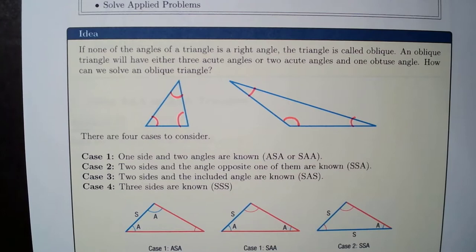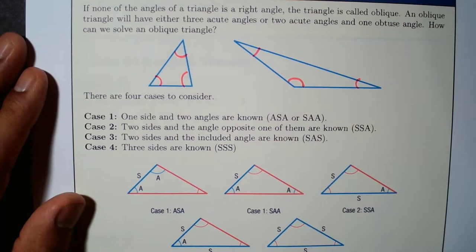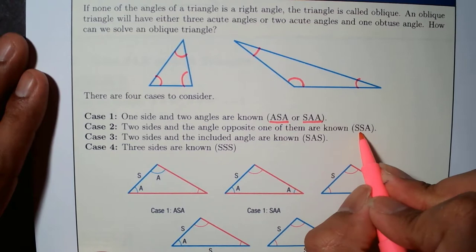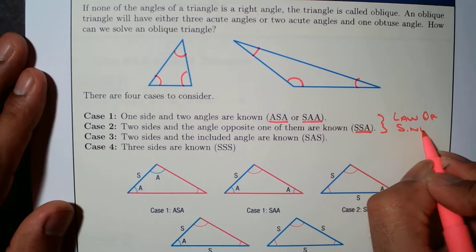So there are four cases to consider. Number one: one side and two angles are known — these are the cases called ASA, angle-side-angle, or side-angle-angle. Case two: two sides and an angle opposite to one of them are known — that is known as side-side-angle. Cases one and two are the Law of Sines.